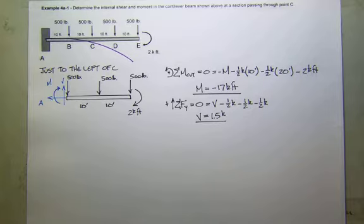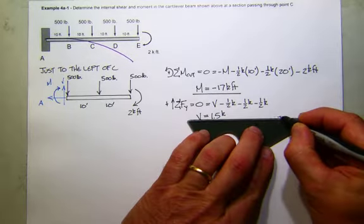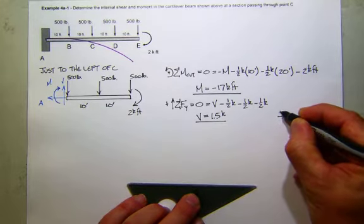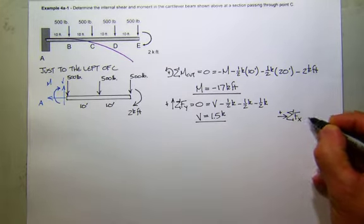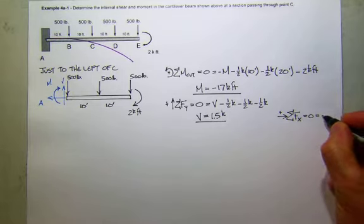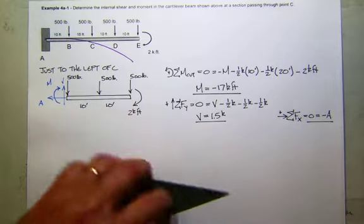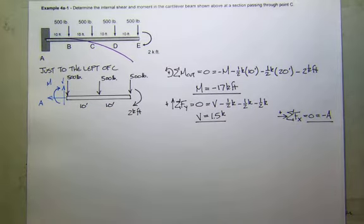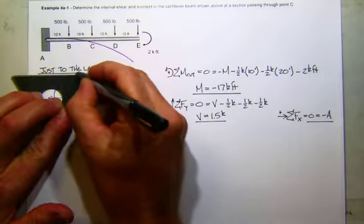What's the axial force? It's zero, right? Just to be sure, I'll sum forces in the x direction to make sure it's in equilibrium. And all we have is minus the axial force. So in this loading case, we have no axial force. Any questions about that? So just to emphasize, this is just to the left of C.